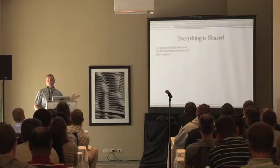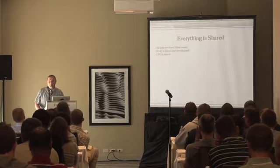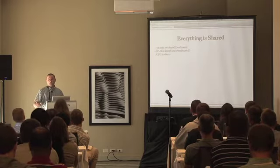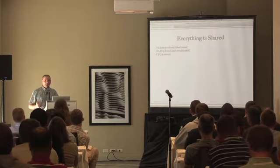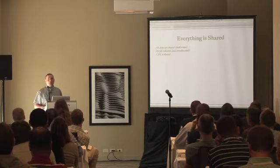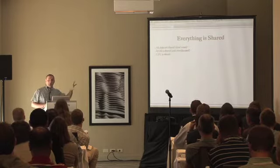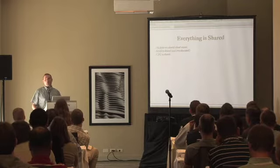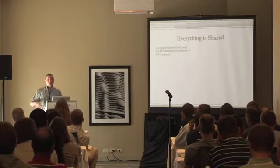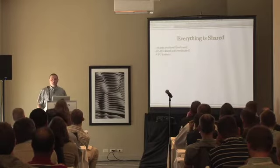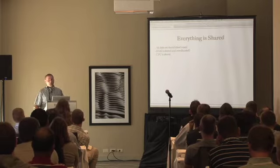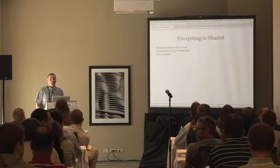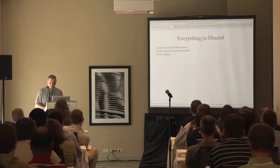Everything is shared — all disks are shared — which means you'll get dead zones occasionally. Your RAM is shared and it's over-allocated. There are times when you're told you have 15 gigs of RAM but in fact you have 10 gigs, and that last 5 gigs is actually in swap — and you on a virtual machine have no way of knowing that. Your CPU is shared, and there's just not much you can do about that.